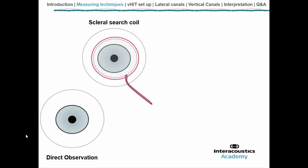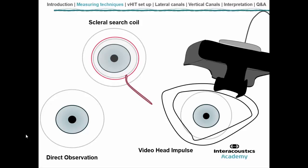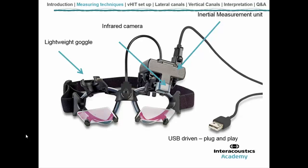So we then developed the video head impulse test. With technology improving all the time, we are now able to record very high frame rates with video cameras and detect these very small movements. What has been shown is that the video camera — and the IC cam in particular — is identical to the scleral search coil in identifying overt and covert saccades in the lateral canals. This is a much more clinically friendly test, because all we need to do is place the goggle over the patient's eyes and we're ready to perform testing straight away. The goggle looks very lightweight — not much to it.